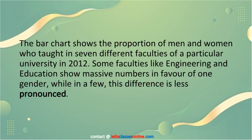Here is the introduction and overview. The bar chart shows the proportion of men and women who taught in seven different faculties of a particular university in 2012. Some faculties like engineering and education show massive numbers in favor of one gender, while in a few, this difference is less pronounced.